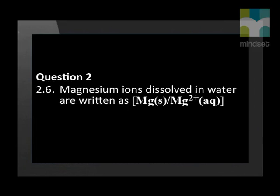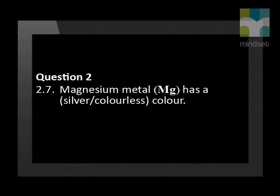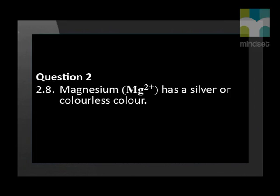Magnesium ions dissolved in water are written as Mg(s) or as Mg²⁺(aq). Magnesium metal Mg has a silver or colorless color. Magnesium Mg²⁺ has a silver or colorless color.